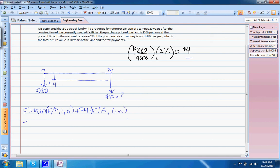And we can solve here, so we'll have F given P, 6%, which comes from this 6% per year, in 20 years, plus our $4, F over A, 6%, 20 years. And we can pull out our factor tables and actually get these values.